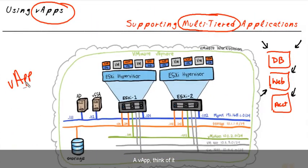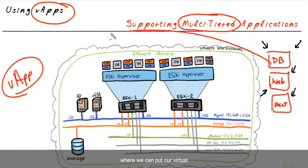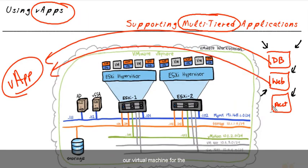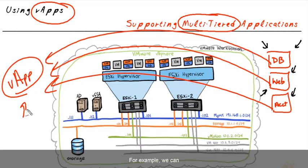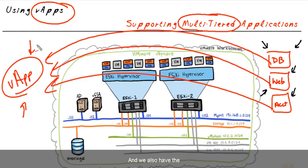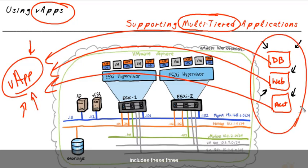A VApp — think of it like a logical container where we can put our virtual machine for the database, our virtual machine for the web server, and our virtual machine for the accounting server. Inside of that VApp, we have additional controls. We can guarantee resources for those virtual machines, control the order they're powered on, and we also have the ability to do exporting — exporting to an OVF or an OVA at the VApp level, which will include the details for each of the virtual machines as part of that VApp.